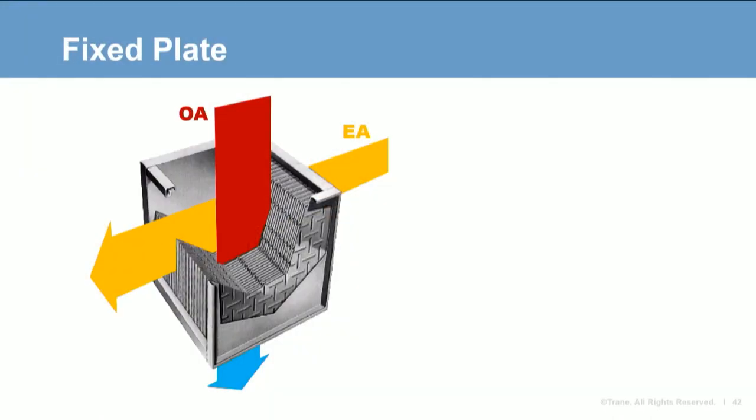The next technology is the fixed plate heat exchanger. It uses a series of plates with internal separators to create independent separate airflow channels. Aluminum is the most common material. The plates and separators are stacked with alternate edges sealed to prevent cross leakage. These exchangers can withstand large pressure differentials — some up to 10 inches of water between sides. Fixed plate heat exchangers can also handle higher temperatures and sometimes have an optional corrosion protection coating.